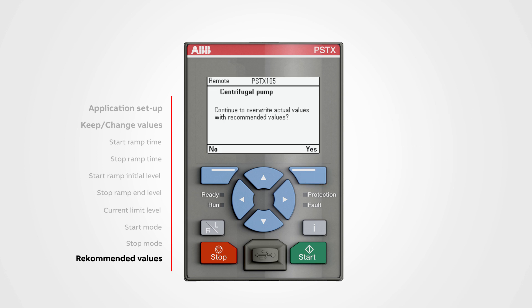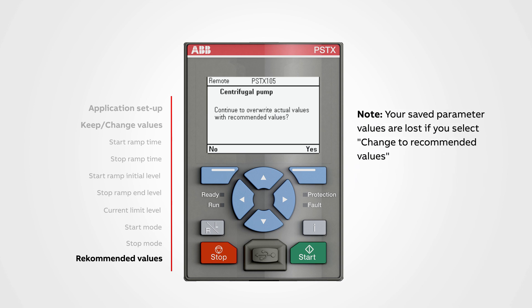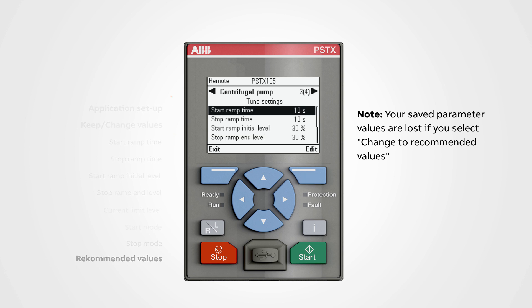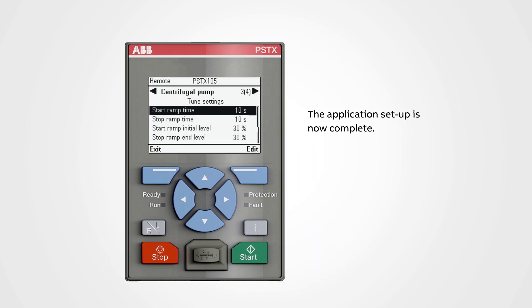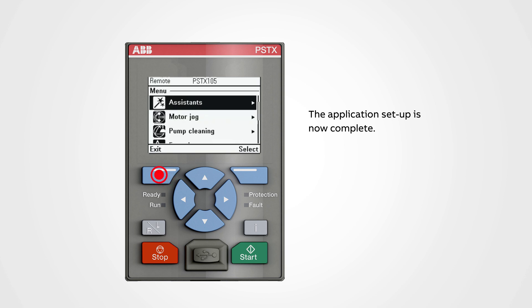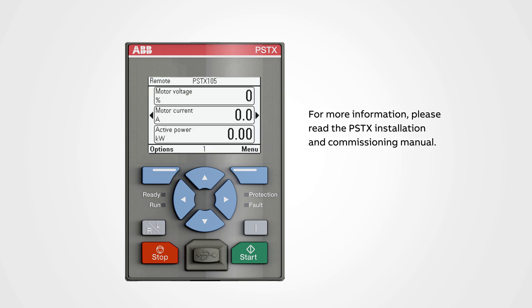Change to recommended values replaces all settings with recommended settings for the centrifugal pump. Push yes to save the recommended settings. Note that your saved parameter values are lost if you select change to recommended values. The application setup is now complete. Return to the home screen with the top left button. For more information, please read the PSTX installation and commissioning manual.